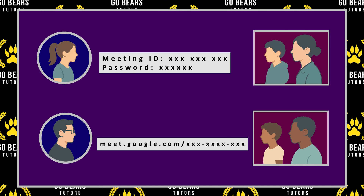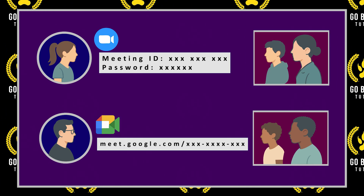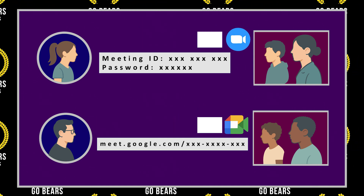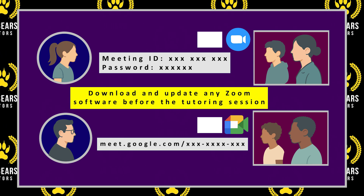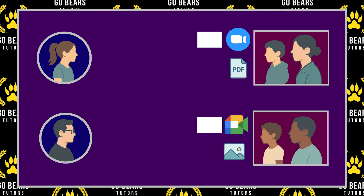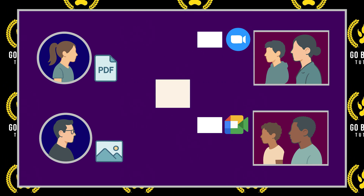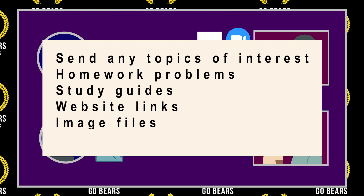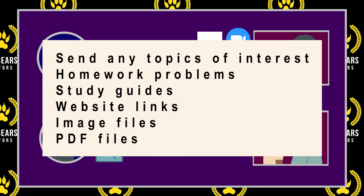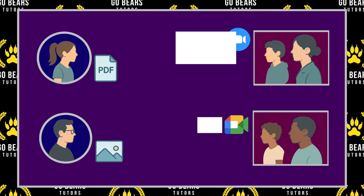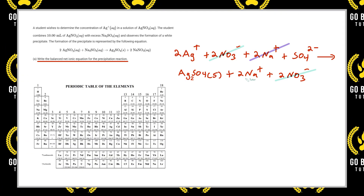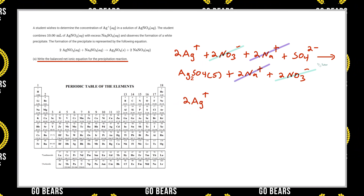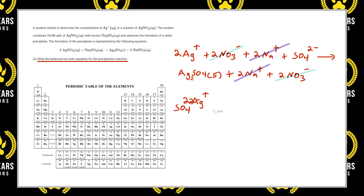Go Bears Tutor will send the Zoom or Google Meets information and a link to an online virtual whiteboard before the tutoring session start time to the email you used to book the session. Please download any Zoom software before the session if needed. Please send any topics of interest, homework problems, study guides, teacher website, or any material you want to go over during the tutoring session. These materials can be in the form of pictures, PDF files, or links. Log in using the Zoom or Google Meets link and/or codes. Make sure to also open up the virtual whiteboard page. You can also pre-fill the virtual whiteboard page with images of problems or topics you want to go over to save time.